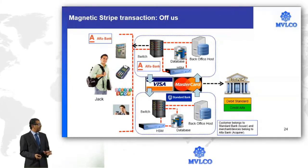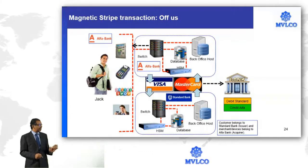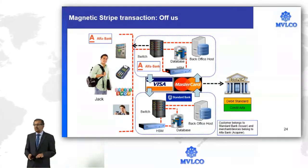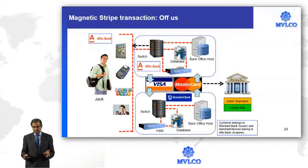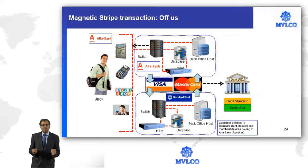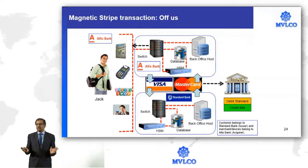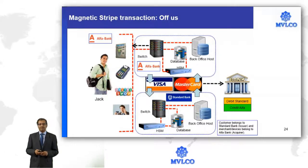These are the three elements: first, messages; then, clearing through Visa or Mastercard; and finally, settlement at the settlement institution. This is the basic concept of how an off-us transaction in a max-type way would work.